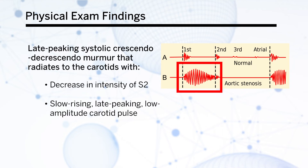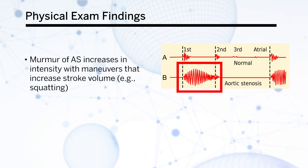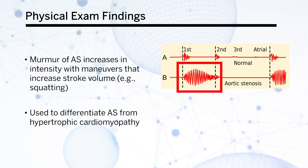There's also a slow-rising, late-peaking, low-amplitude carotid pulse. The murmur of aortic stenosis increases in intensity with maneuvers that increase the stroke volume, such as squatting. This can be used to differentiate it from hypertrophic cardiomyopathy.